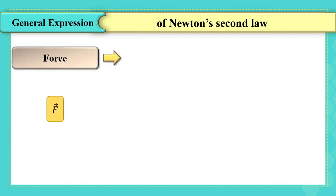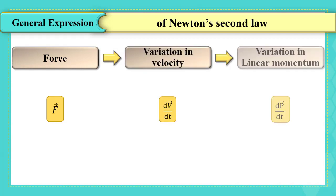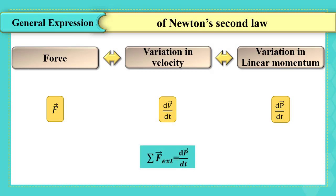We know that a force applied to a body changes its velocity and therefore its linear momentum. The more rapid the variation of the linear momentum, the stronger the force causing this variation. Both the force and the variation of linear momentum affect each other. This variation is governed by the general expression of Newton's second law: the sum of external forces equals the variation of linear momentum dp by dt.